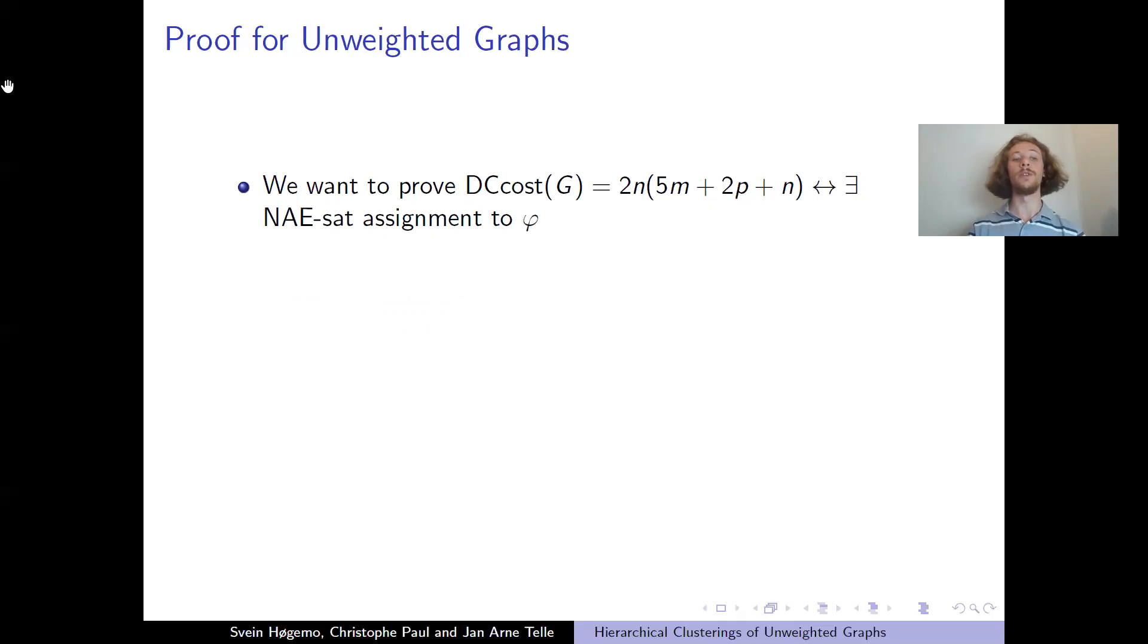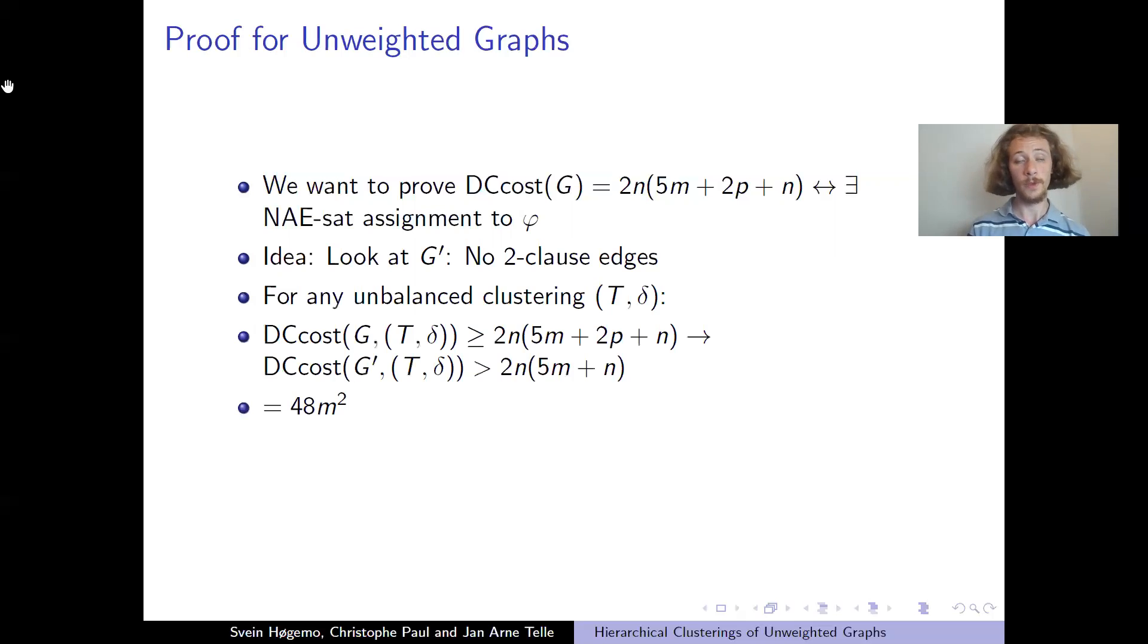That was the first question. And then we look at the same reduction, but not giving a large weight to the matching edges only. So then the DC cost would be this above here. And to try to prove that this is the highest cost possible, and that there is no such clustering if there isn't any satisfiable assignment to the underlying formula, then we look at the graph that you get by taking away the 2-clause edges. So you have only triangles and matching edges. So, it's easy to see then that for any clustering of the original graph, the clustering of this graph must have cost at least 48 times m squared, where m is the number of 3-clauses in the graph, which is m is equal to one third of n, obviously.